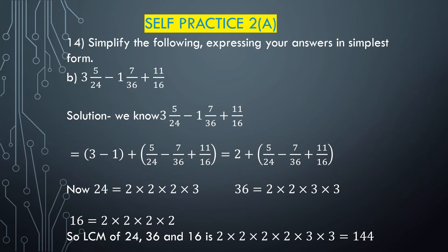Now we solve part (b): 3⁵/24 minus 1⁷/36 plus 11/16. We have to simplify this expression. First, we separate the whole number part and fractional part. The whole number part is 3 minus 1, and the fractional part is 5/24 minus 7/36 plus 11/16.